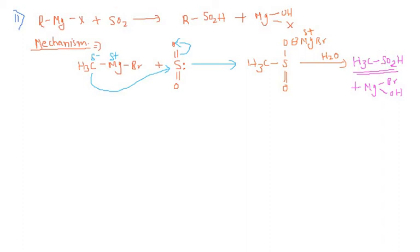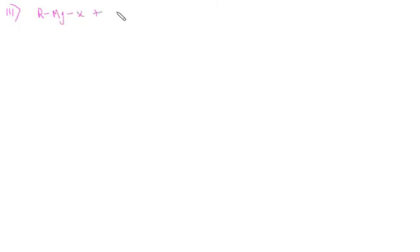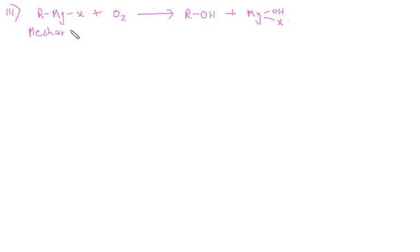In the next reaction we will study the reaction of Grignard reagent with oxygen. This will yield alcohol along with the by-product magnesium hydroxy halide. Let's see the mechanism of this reaction. We will take the example of methyl magnesium bromide which is made to react with oxygen.